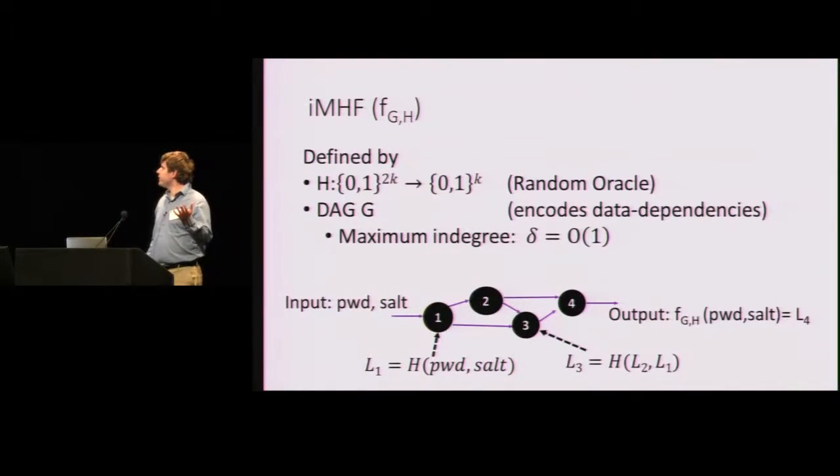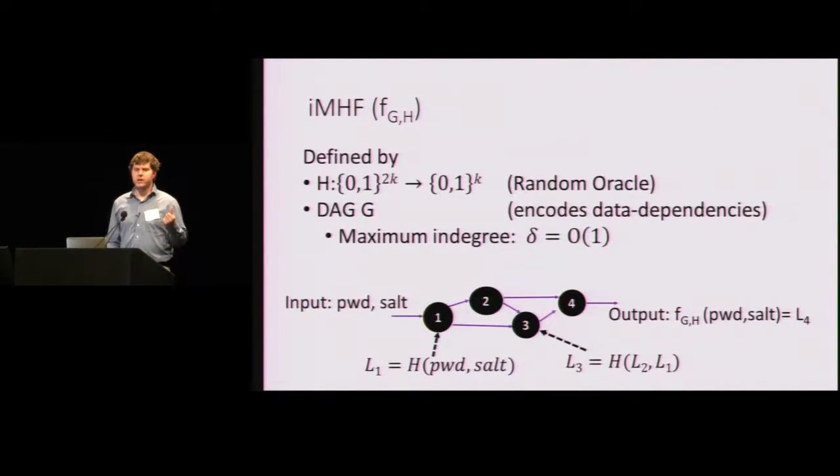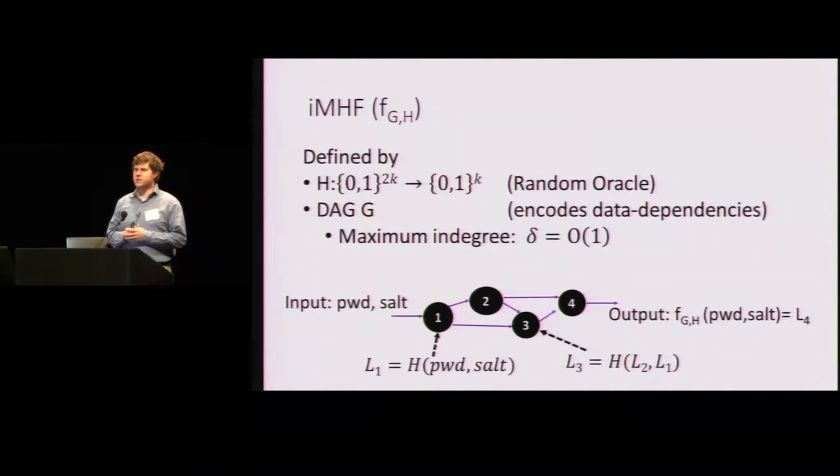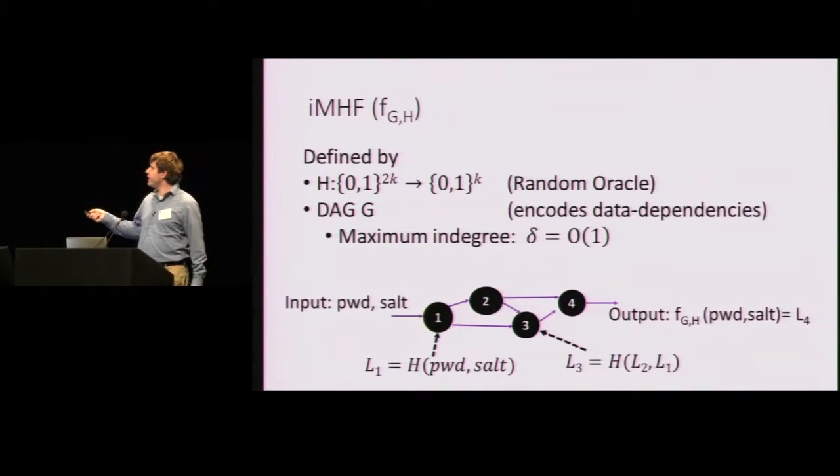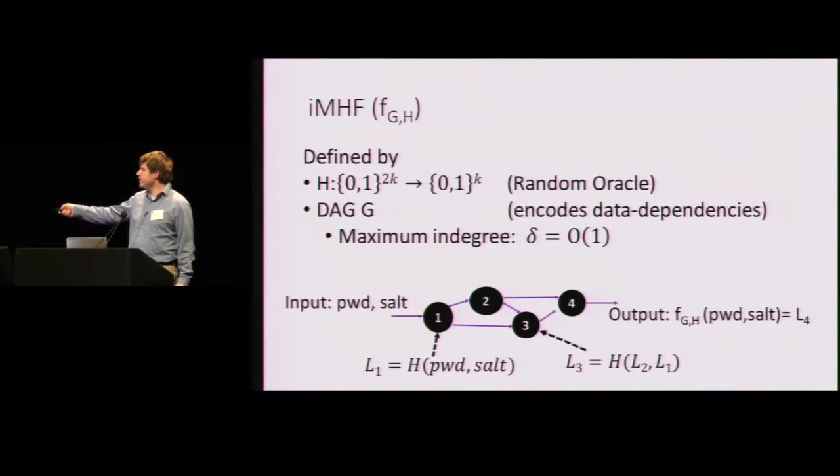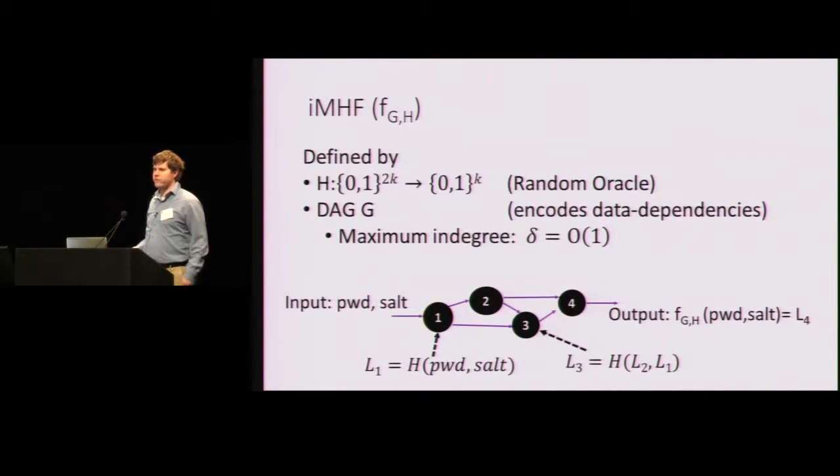All right. So formally, what is a data independent memory hard function? Well, a data independent memory hard function is defined by two things. A directed acyclic graph G, which specifies data dependencies during computation. And a compression function H, which we'll treat as a random oracle in our analysis. So given a graph as follows, how do we compute this function? The input is the password and the salt. The label of the first node is just the hash of the password and the salt. The label of an internal node is the hash of its parents. So in this case, the label of node 3 is the hash of label 2 and label 1. And finally, the output of this function is the label of the last node, the sync node.